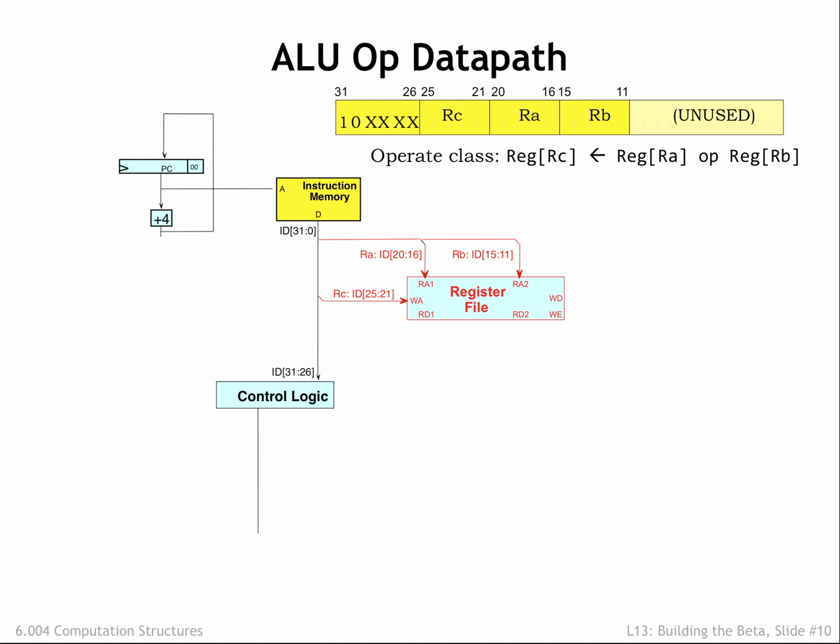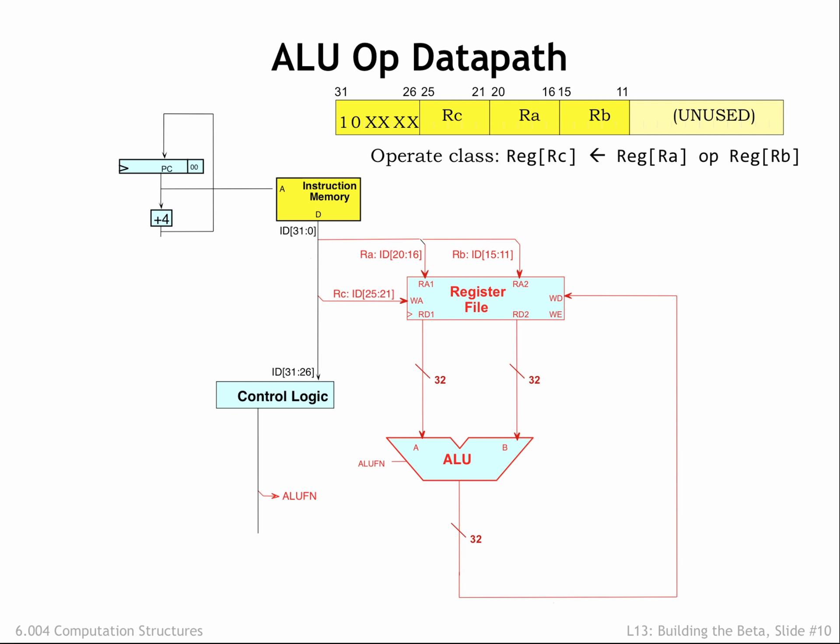Now let's fill in the datapath logic needed to execute ALU instructions with two register operands. The instruction bits for the 5-bit RA, RB, and RC fields can be connected directly to the appropriate address inputs of the register file. The RA and RB fields supply the addresses for the two read ports, and the RC field supplies the address for the write port. The outputs of the read data ports are routed to the inputs of the ALU to serve as the two operands.